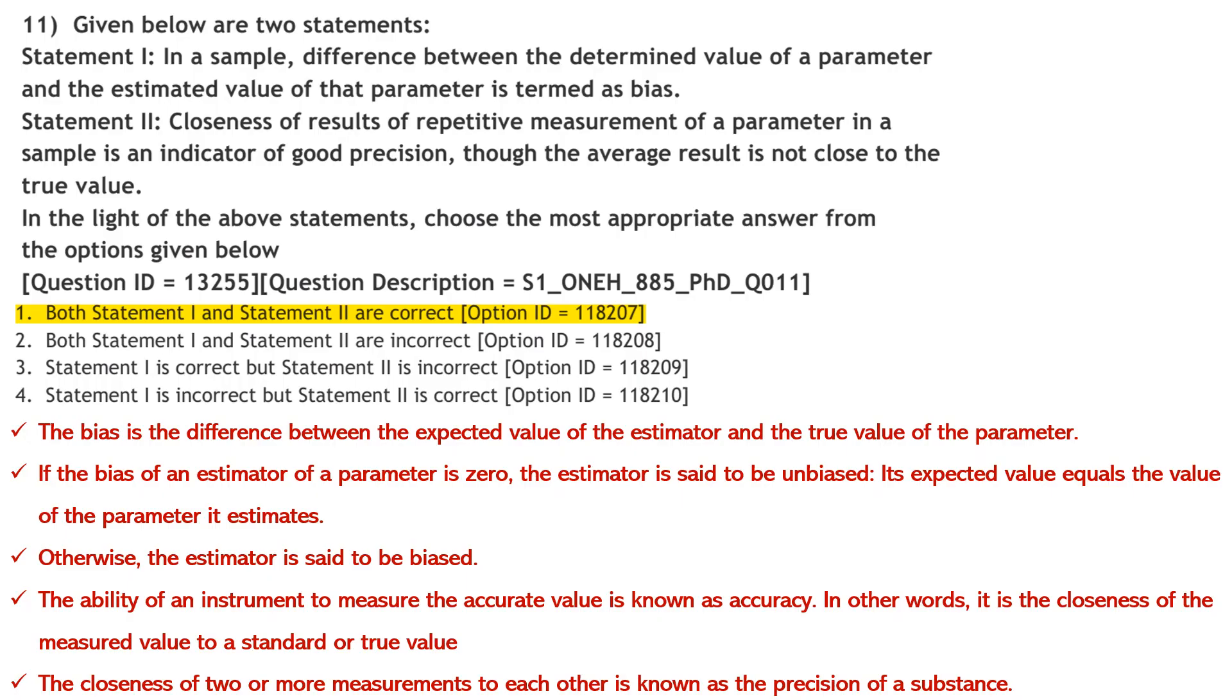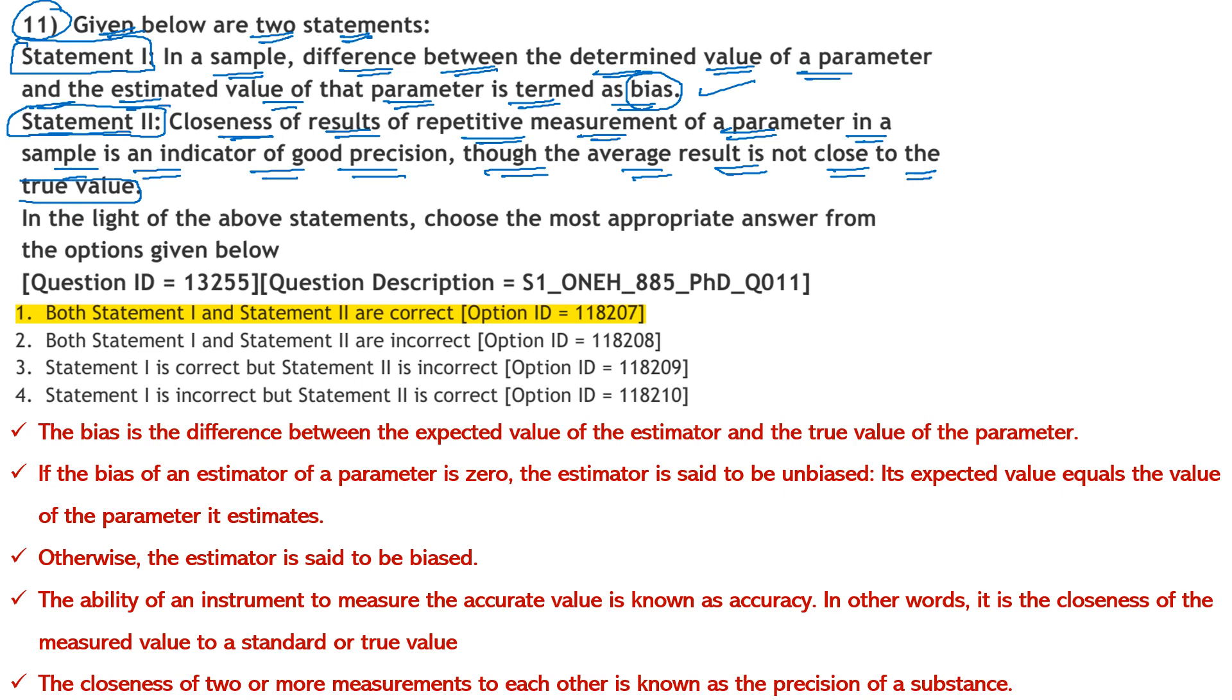The first question presents two statements. Statement 1 says: In a sample, the difference between the determined value of a parameter and the estimated value of that parameter is termed as bias. This is 100% correct. Statement 2 says: Closeness of results of repetitive measurements of a parameter in a sample is an indicator of good precision, though the average result is not close to the true value.